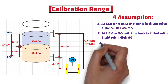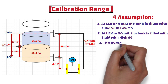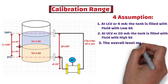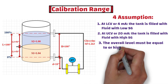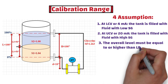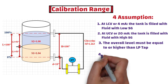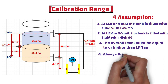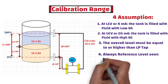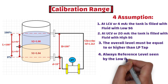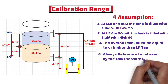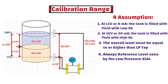In addition to this, let's assume that the overall level must be equal to or higher than the low pressure tap. Last but not the least, let's assume that the reference level is always seen by the low pressure side — in other words, the reference level must have a constant height and density.